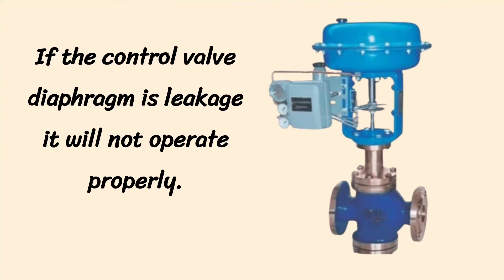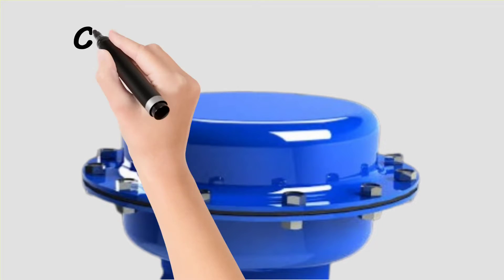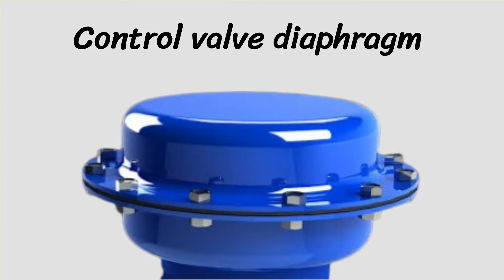Control valve diaphragm remains in the area shown by the arrow. You can better understand by this image. Control valve diaphragm remains in this part of control valves.